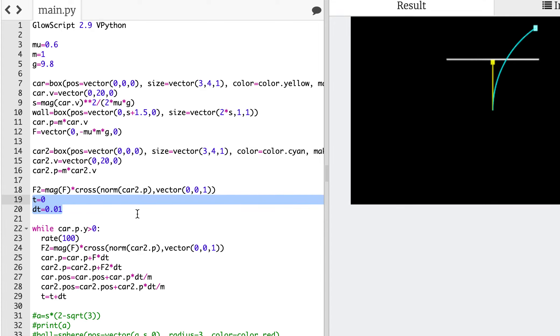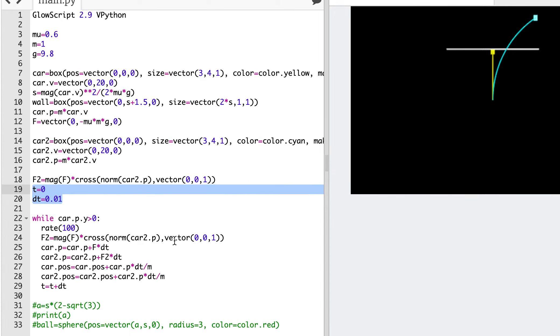And then I have my time and my dt and then my loop. This one, I don't have to recalculate this force because it's the same, but I do need to recalculate F2, so I put that in the loop. Then here I update the momentum, here I update the position, and so forth, and then we got it.